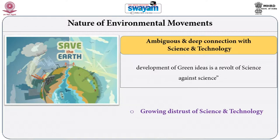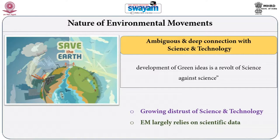But at the same time, these environmental movements also rely to a great extent upon science and scientific data to put forth their claims. Environmental movements like those against global warming and for climate change essentially depend upon scientific data about global warming, pollution, and climate change. In that sense, science and technology play a crucial and ambiguous role in environmental movements.